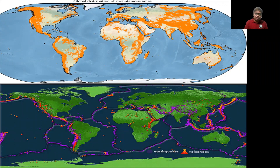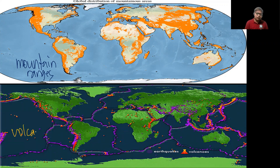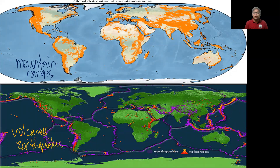Here are the mountain ranges in one map, and below are the volcanoes and earthquakes. Volcanoes are colored orange and earthquakes are colored purple. If you take a closer look at the distribution of the mountain ranges and the volcanoes and earthquakes, you can find them almost in the same places.